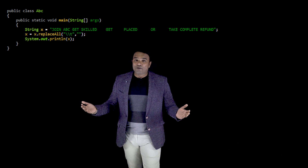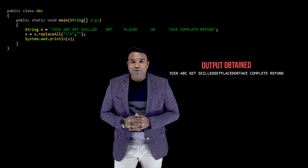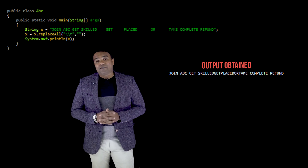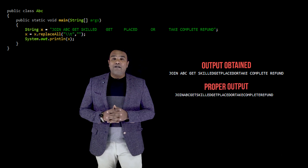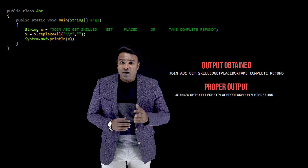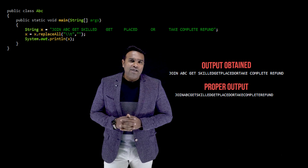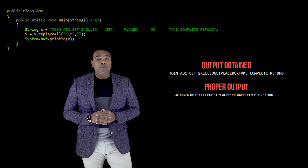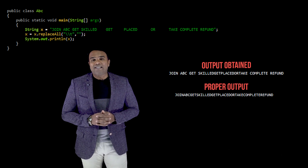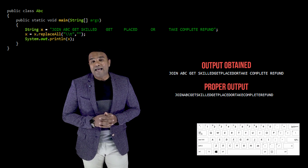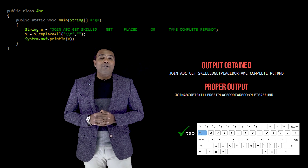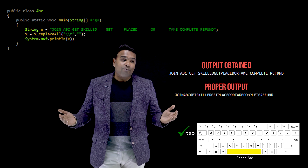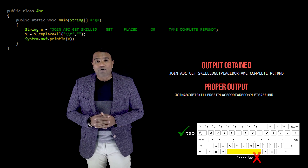When I execute the program, the output is again not as per expected. My program has been successful in eliminating white spaces created by the tab key, but this time it is failing to eliminate white spaces created by the space bar. That is what we are noticing in the output.